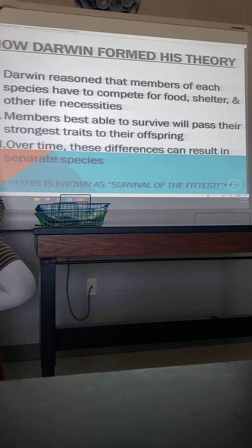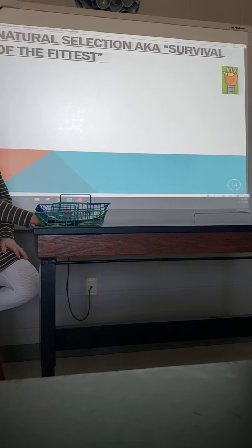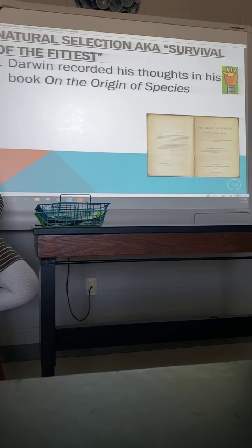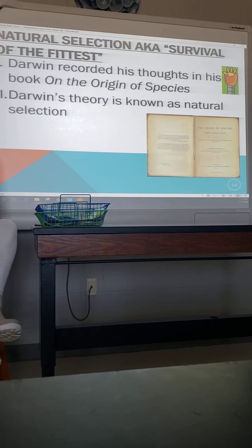We call this process survival of the fittest — again, not the most physically fit or most athletic, but the one best fit for that environment. Scar wasn't the most physically fit — Mufasa and Simba had more prototypical lion body types, bigger, stronger, faster — but Scar was more fit for that new burnt environment. Darwin recorded his thoughts in a book called 'The Origin of Species,' about how species get created and where changes come from. His theory is also known as natural selection — nature is doing the selecting.